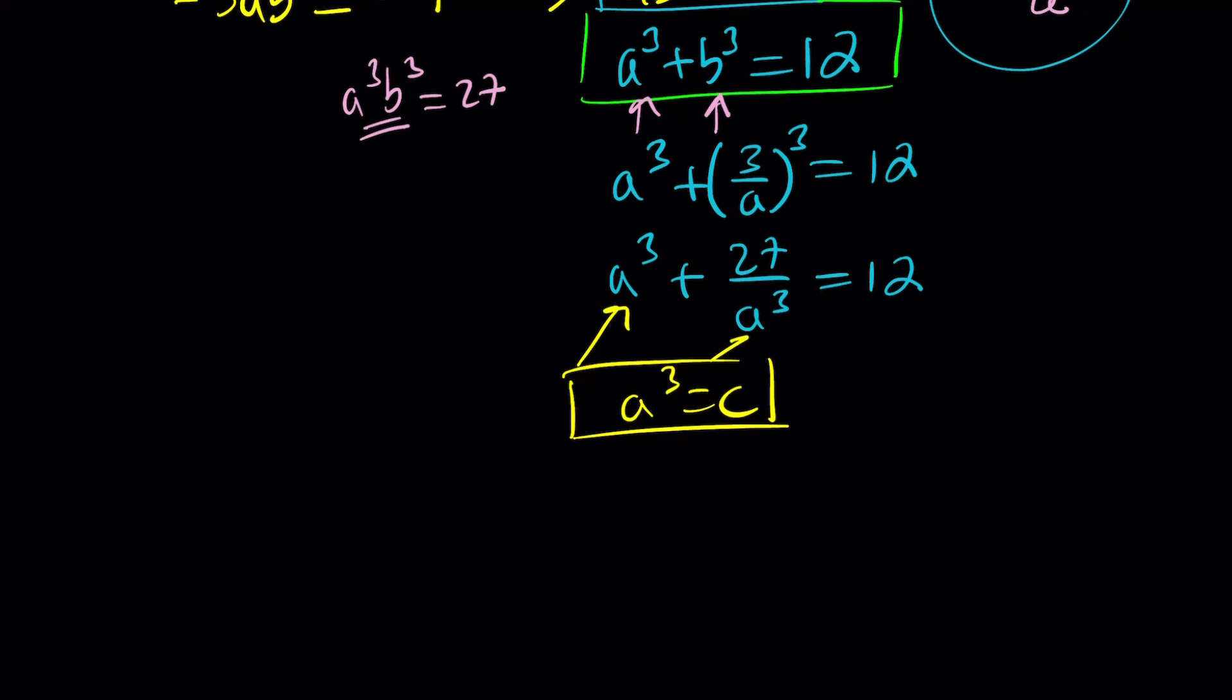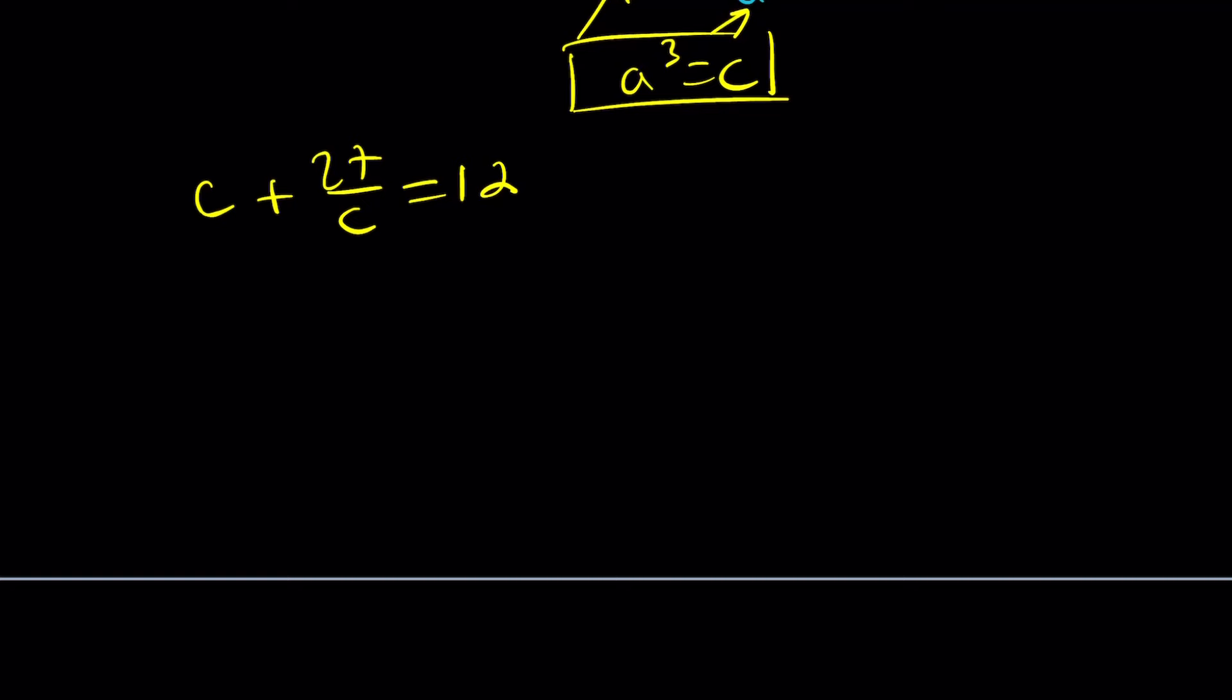From here, we get c + 27/c = 12. Now we can multiply everything by c to turn this into a quadratic equation. We get c² + 27 = 12c, then c² - 12c + 27 = 0.